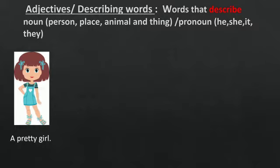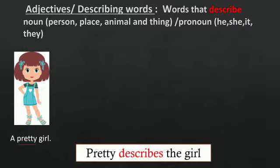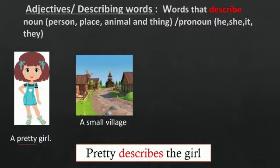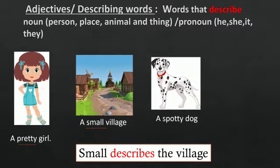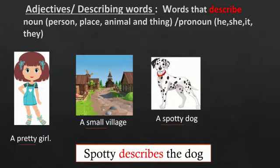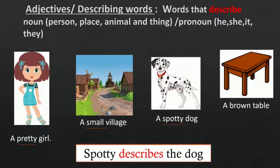A pretty girl, pretty describes the girl. A small village, small describes the village. A spotty dog, spotty describes the dog. A brown table, brown describes the table.